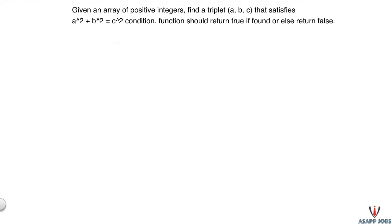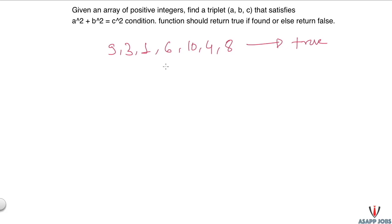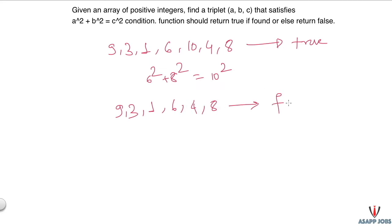For example, if the input array has elements [9, 3, 1, 6, 10, 4, 8], the function should return true, because we have the triplet 6² + 8² = 10². Similarly, if the input array is [9, 3, 1, 6, 4, 8], the method would return false, because there is no triplet satisfying a² + b² = c².